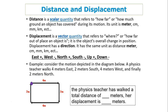Distance is the scalar quantity that refers to how far or how much ground an object has covered during its motion. Its unit is meter, centimeter, millimeter, kilometer, etc. Displacement, on the other hand, is a vector quantity that refers to where or how far out of place an object is.